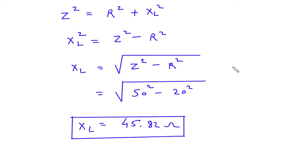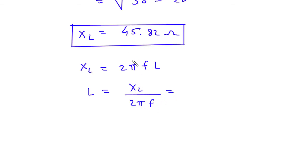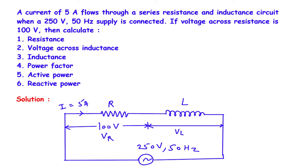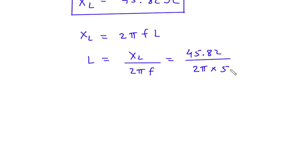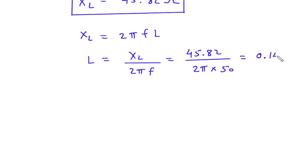From here we can find the value of inductance, because inductive reactance XL is equal to 2πFL. So L is equal to XL divided by 2πF. The value of XL is 45.82, divided by 2π multiplied by frequency F, which is 50. If we calculate this, L equals 45.82 divided by 2 × π × 50, which gives 0.145 Henry. Therefore L is equal to 0.145 Henry.